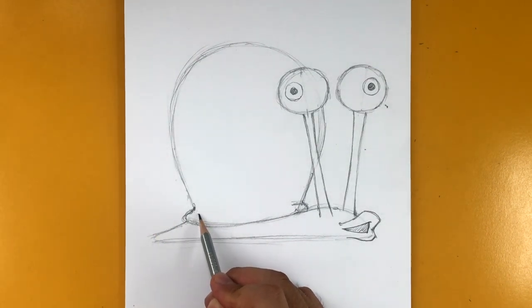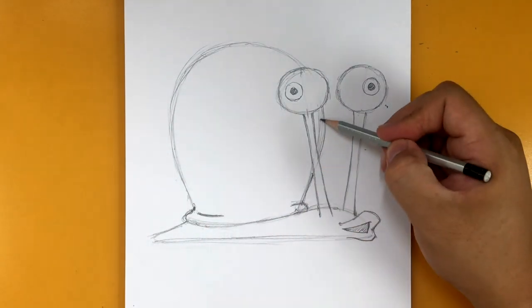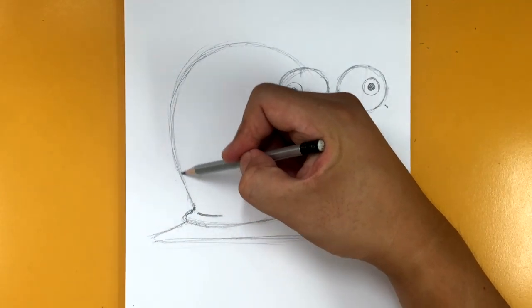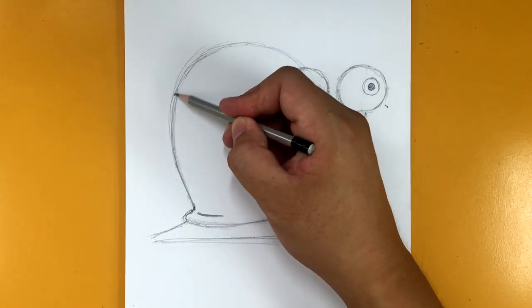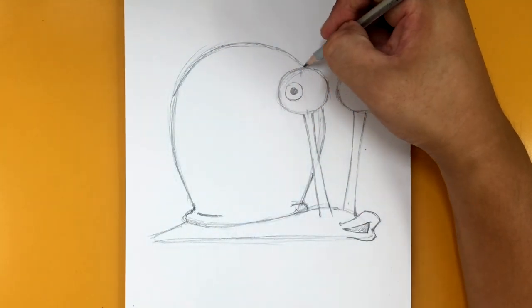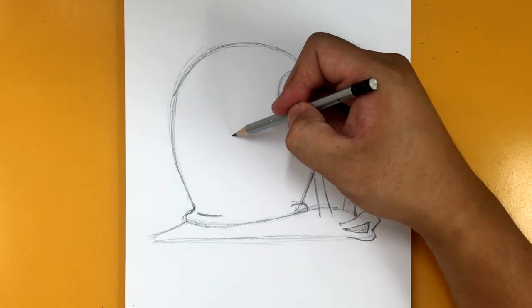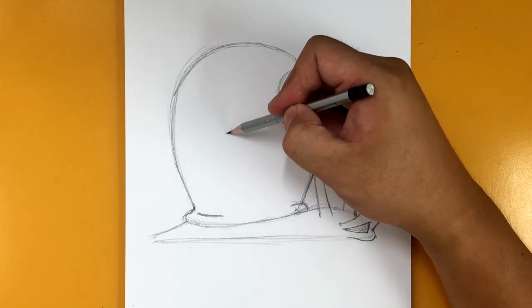So let's go back to the shell and let's work on the design inside the shell. So there's a line right there and then a line over here. Okay. So now I'm going to find kind of the center of the shell right around here.